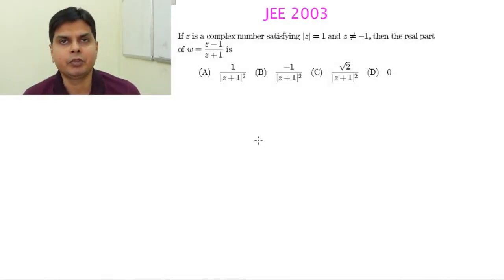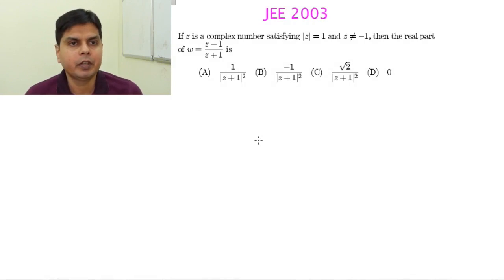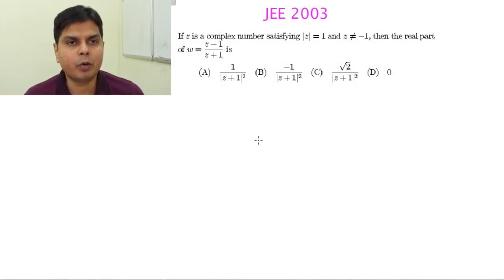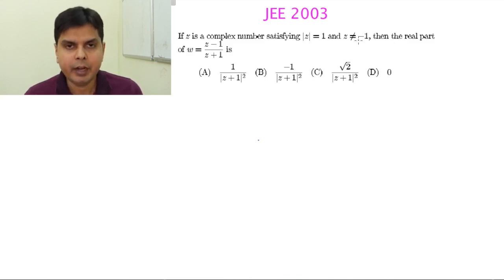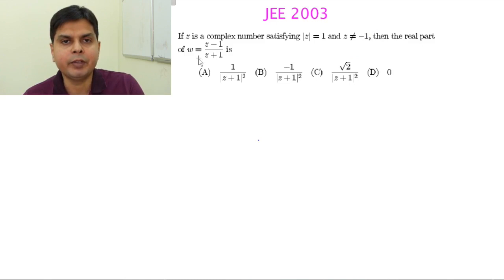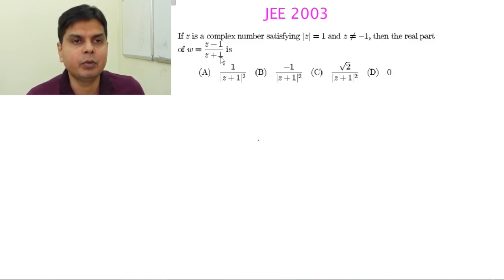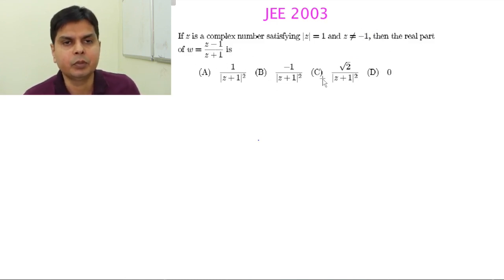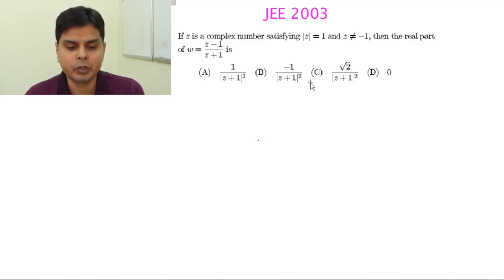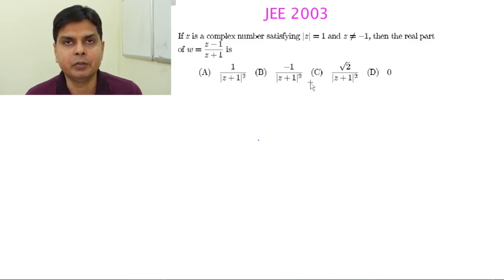This is a problem of JEE 2003. The problem is as follows: if Z is a complex number satisfying modulus Z equal to 1 and Z not equal to minus 1, then the real part of W equal to (Z minus 1) by (Z plus 1) is. Four options are given. This is an objective type question and I will solve this problem using 3 to 4 different methods.